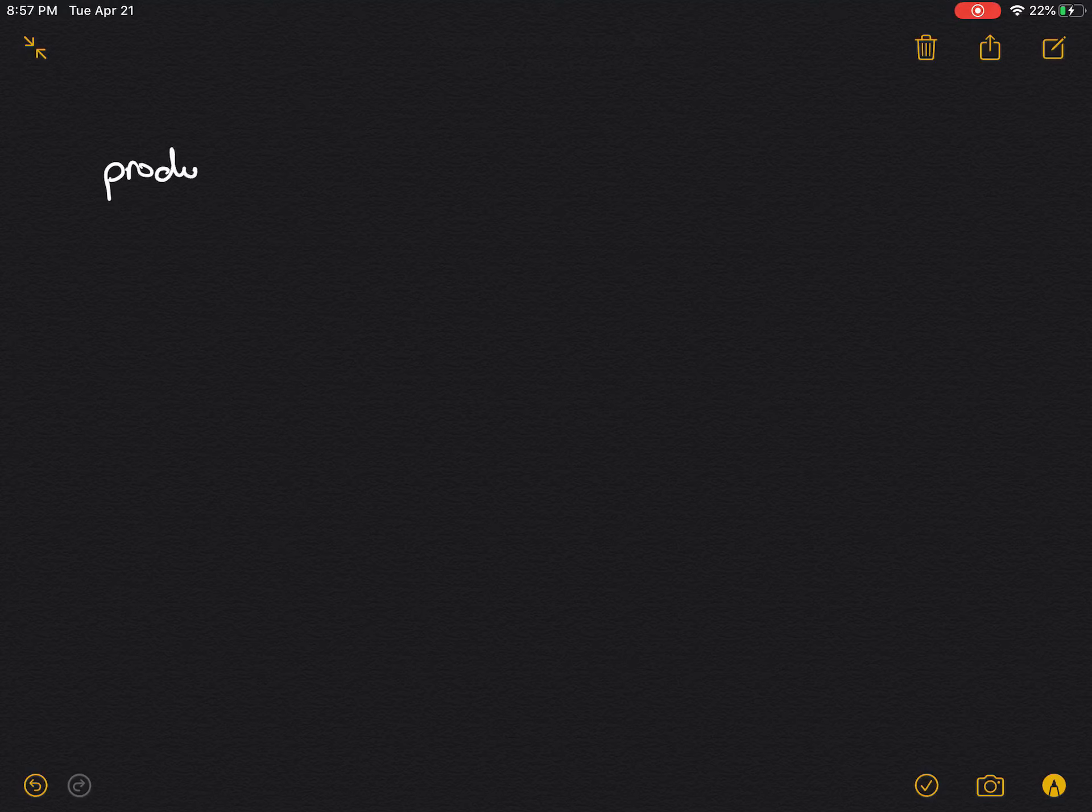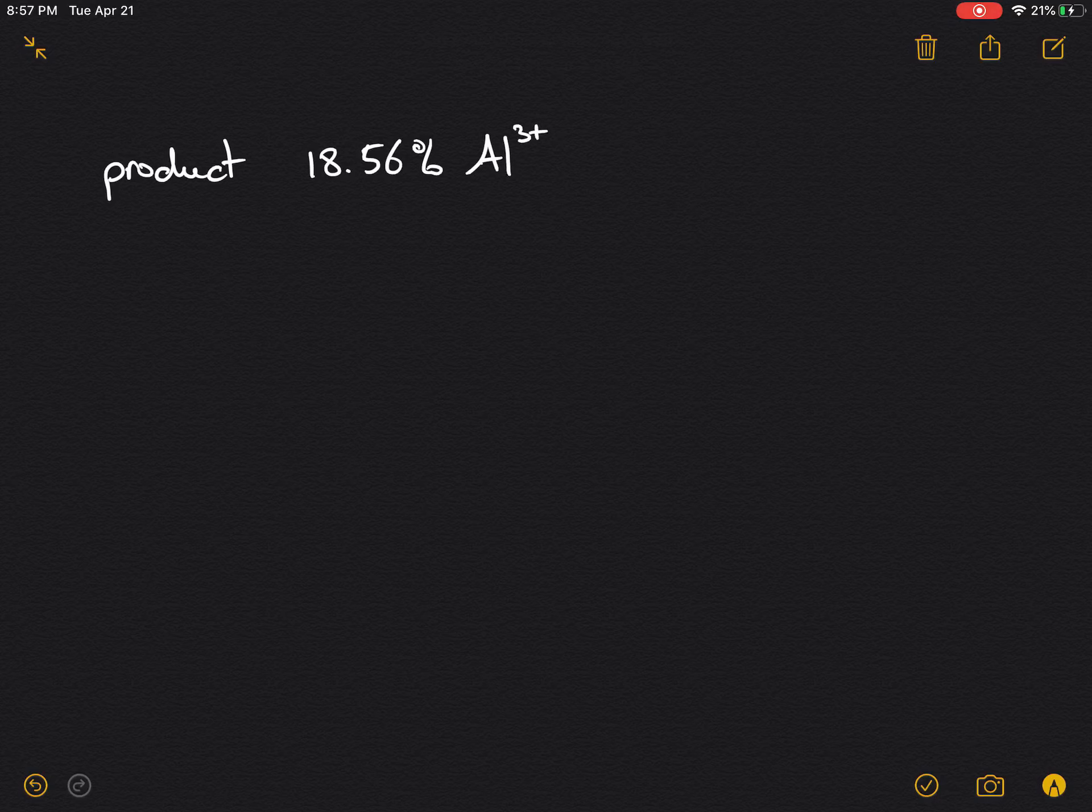We're told that the product is comprised of 18.56% aluminum. Aluminum would be 3+ ions in an ionic compound, and 100 minus that would yield 81.44% of element X.